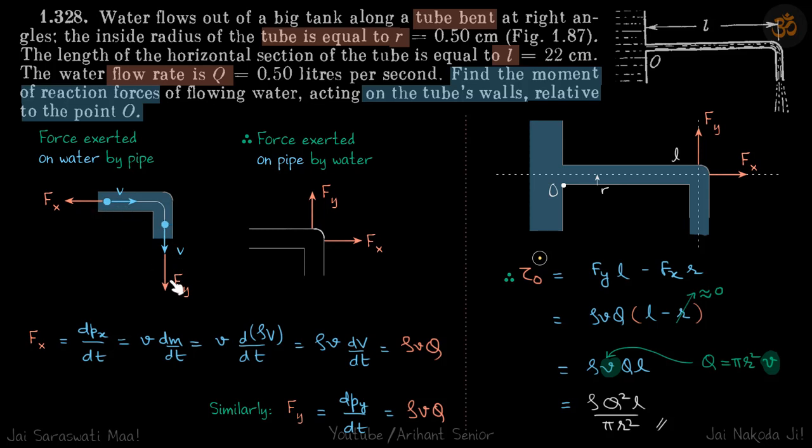So Fx and Fy are the forces experienced by the liquid. So opposite of that will be the forces experienced by the pipe. Fy on the water is down, so Fy on the pipe is up. Fx on the water is towards left, so Fx on the pipe is towards right. These are the forces exerted on water by pipe, and the reaction forces are these which are exerted on pipe by water.